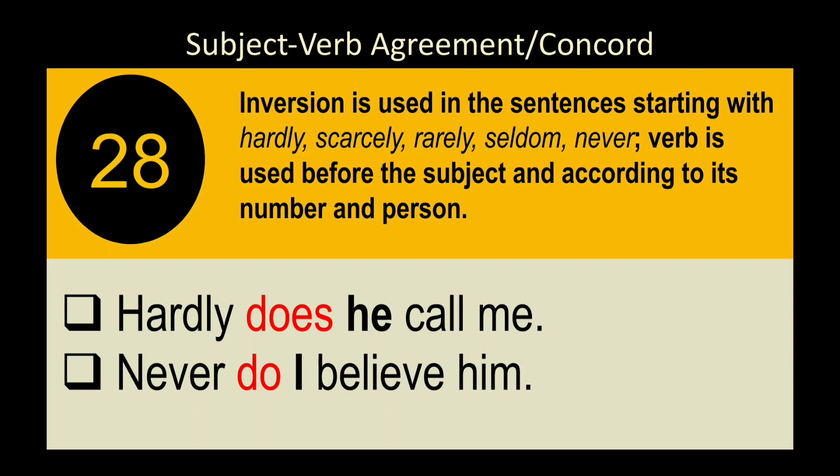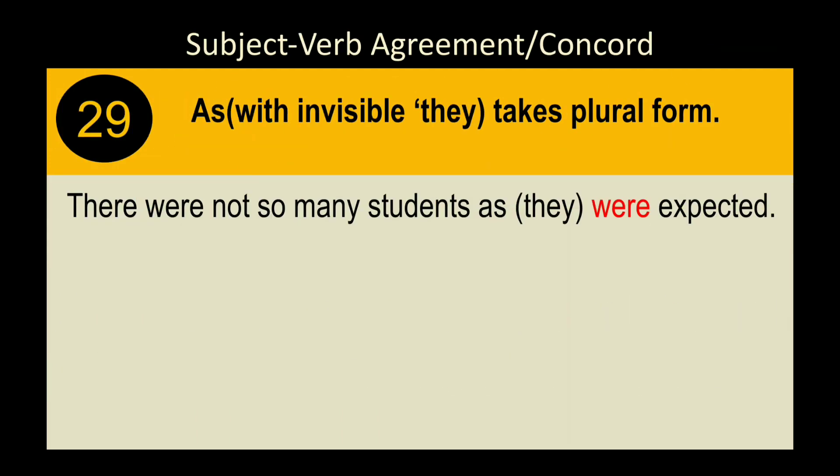Rule 30: In sentences beginning with words like 'hardly,' 'scarcely,' 'rarely,' 'seldom,' 'never,' there is inversion — the verb comes before the subject. The verb agrees with the subject's number and person. Examples: 'Hardly does he call me.' 'Never do I believe him' — 'I' takes 'do'; 'he' takes 'does.'